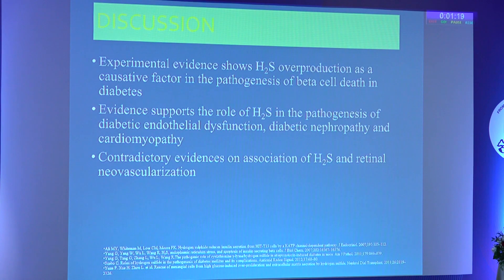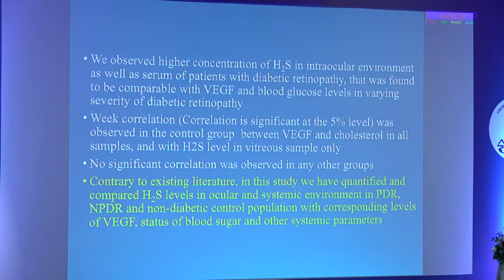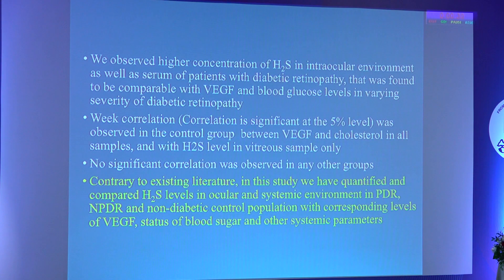Experimental evidence shows H2S overproduction as a causative factor in the pathogenesis of beta cell death in diabetes. Evidence supports the role of H2S in the pathogenesis of diabetic endothelial dysfunction, diabetic retinopathy, and cardiomyopathy. Contradictory evidence exists on the association of H2S and retinal neovascularization — some studies support a protective role, while others show a harmful effect on retinal neovascularization in diabetic retinopathy. We observed higher concentrations of H2S in the intraocular environment and serum in patients with diabetic retinopathy, comparable with VEGF and blood glucose levels across varying grades. A weak correlation was observed in the control group with VEGF and cholesterol, and with H2S in vitreous samples only. No significant correlation was observed in any of the groups. Contrary to existing literature, this study quantified and compared H2S levels in ocular and systemic environments in NPDR, PDR, and non-diabetic control populations with corresponding VEGF and systemic parameters.